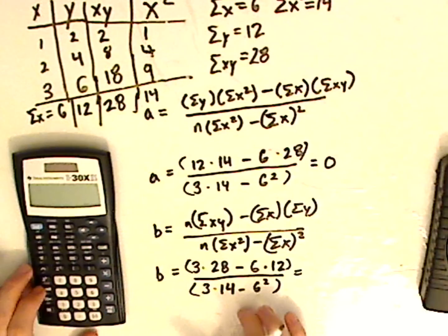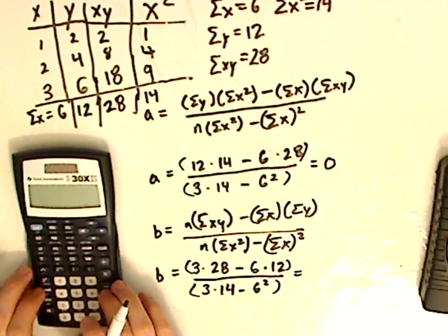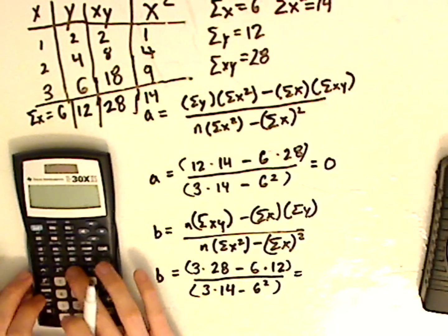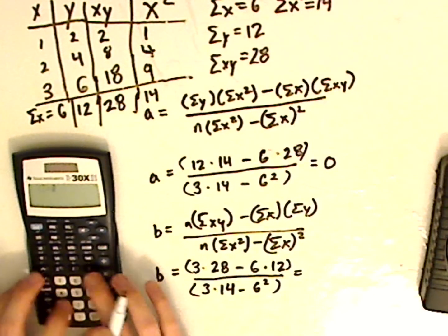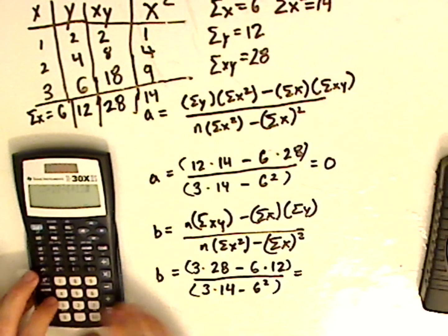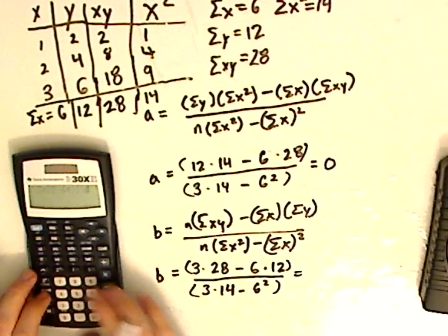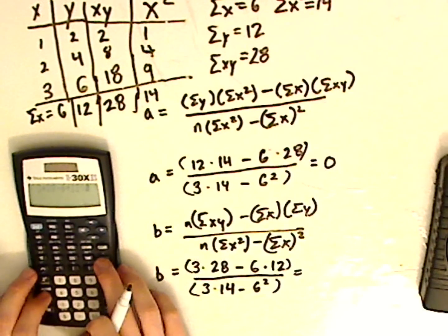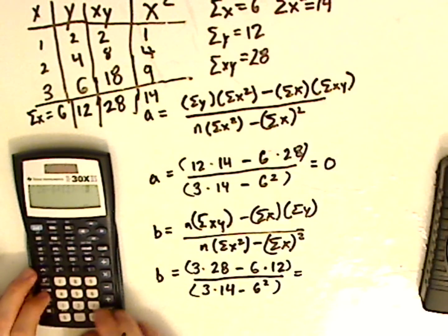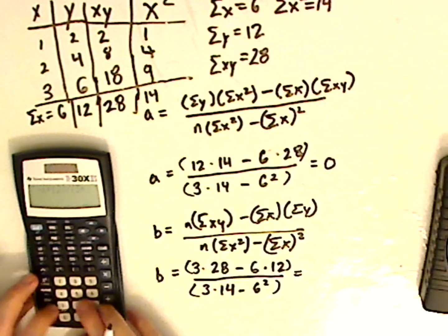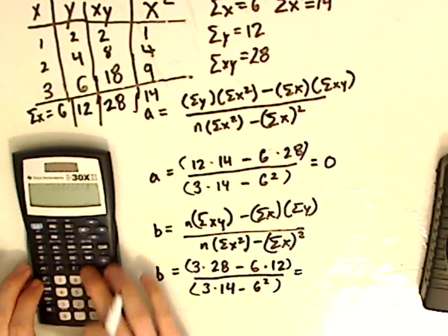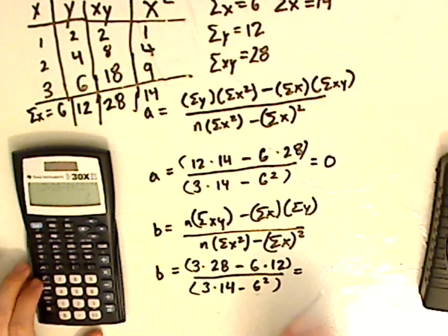Clear. And when you look at the slope b: open parentheses, 3 times 28, minus 6 times 12, close parentheses for the numerator, divided by, open parentheses, 3 times 14, minus 6 squared, close parentheses. That equals 2.